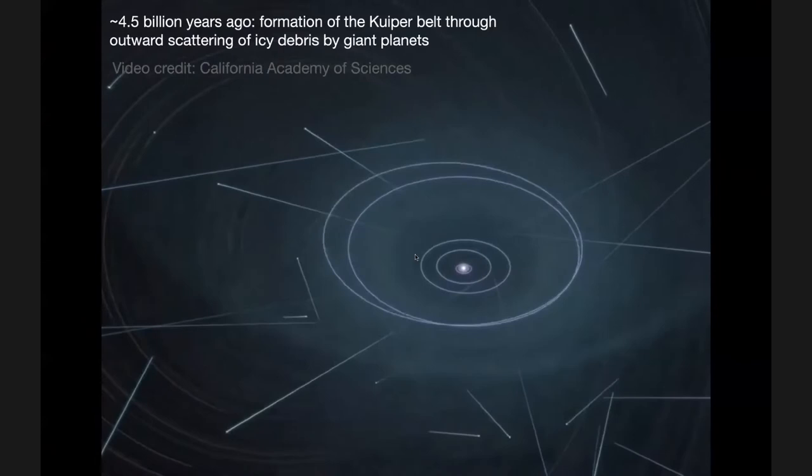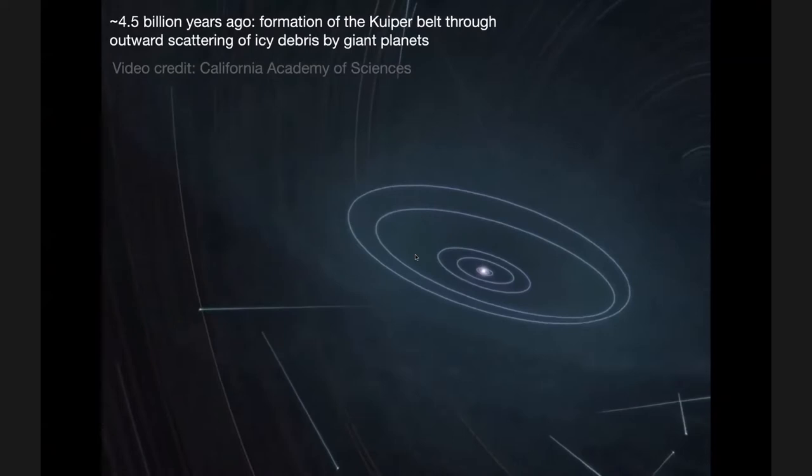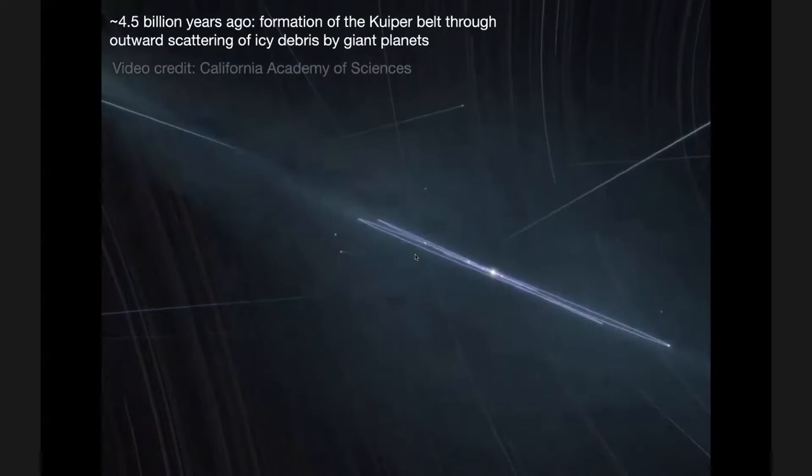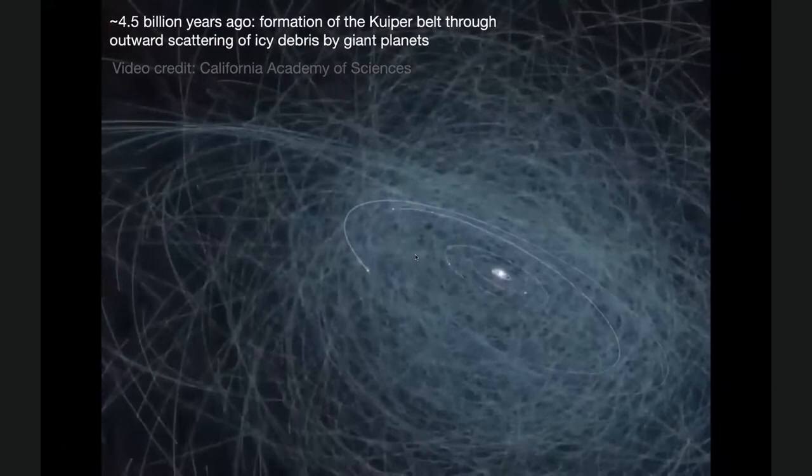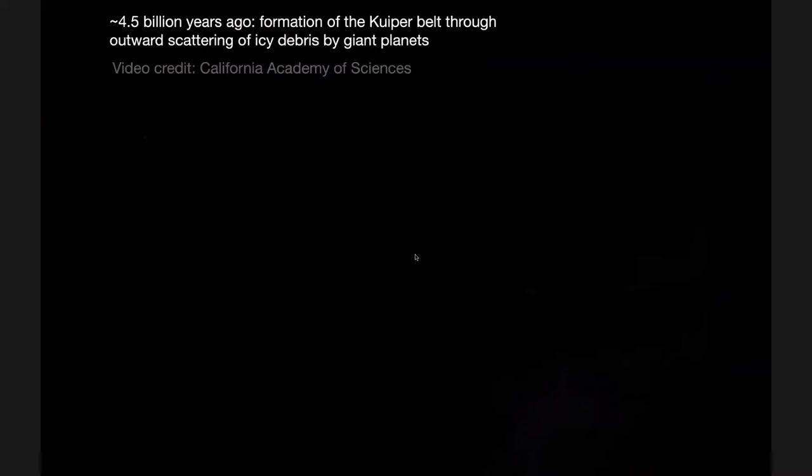And then over the subsequent 100 million years, the first 100 million years of the solar system's lifetime, the planets kind of go unstable and then end up roughly where they are today. And this class of models, which are instability driven models, are often referred to as the Nice model collectively, and there are many different variants of it. But the basic idea is that as a consequence of this early instability, much of the icy debris that initially encircled the sun gets scattered out. And the remainder, the last 0.1% of that stuff, is what we now observe as the Kuiper belt.